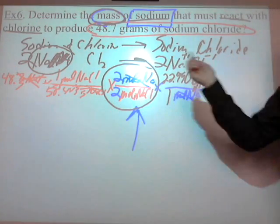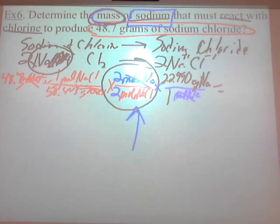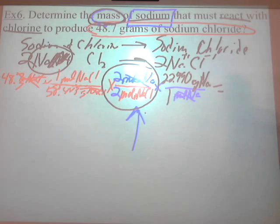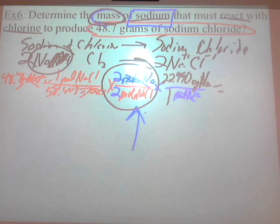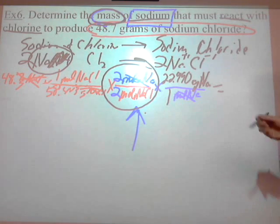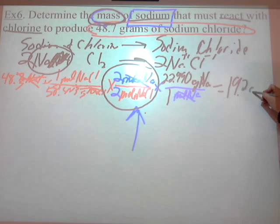I'm almost done — get your calculator out. Multiply and divide all that out. You don't even need to multiply and divide by the 2/2 — it's just 1 anyway. What do you get for that answer? 19.2 grams. 19.2 grams of Na — does that sound good everybody?